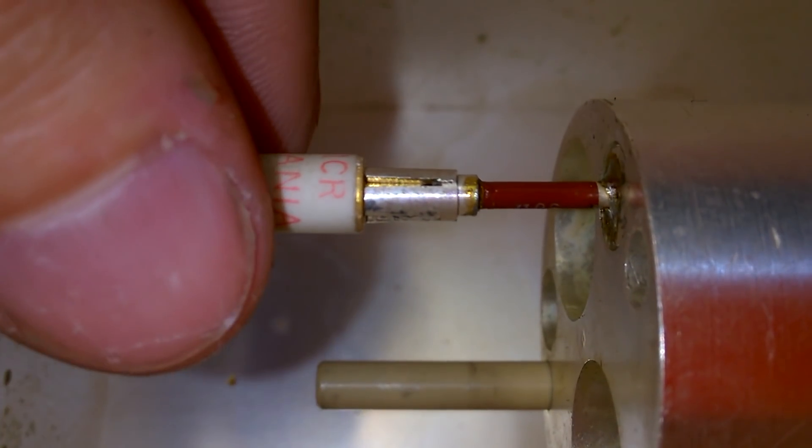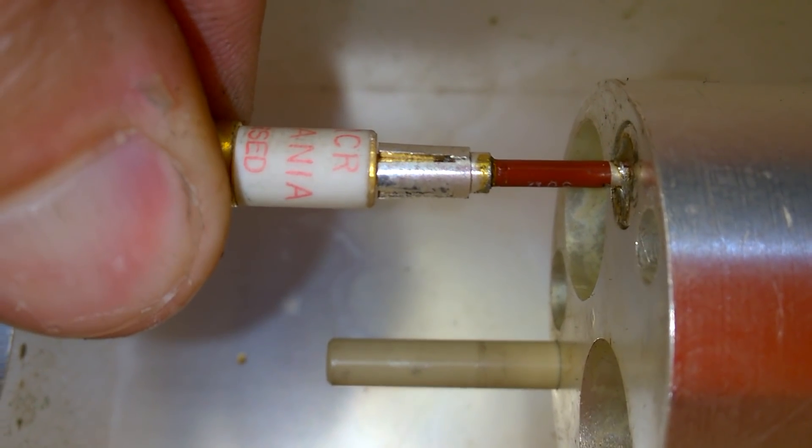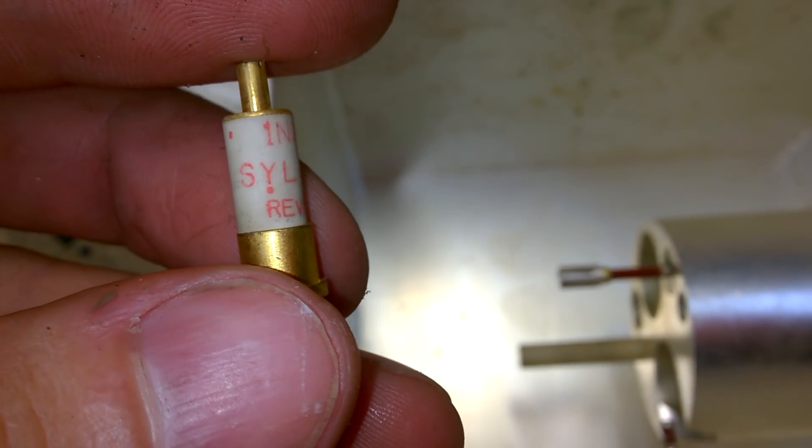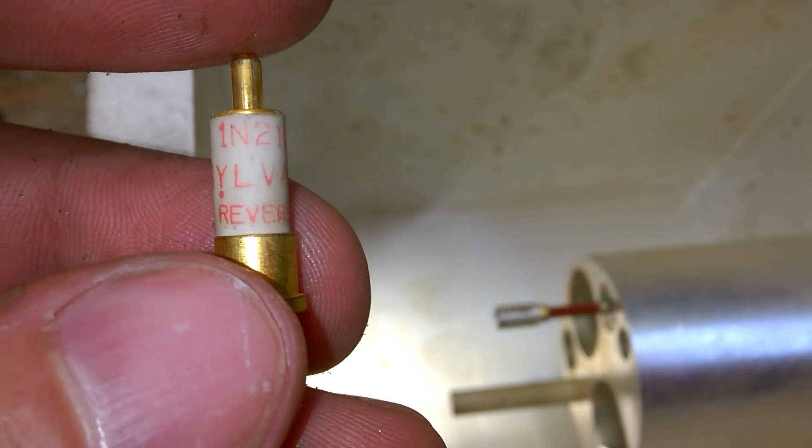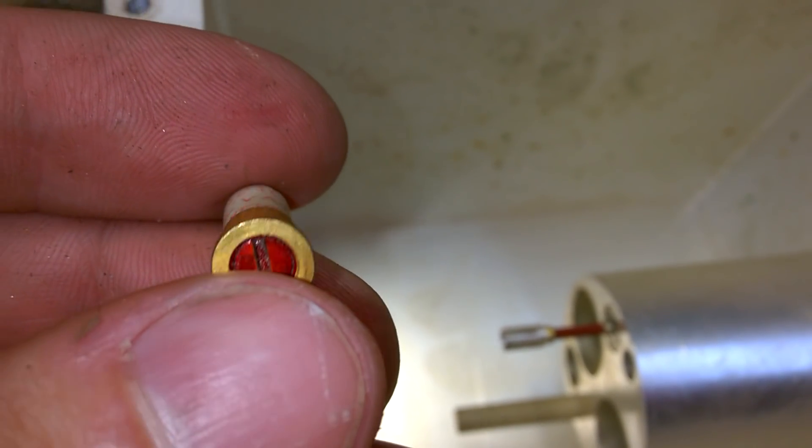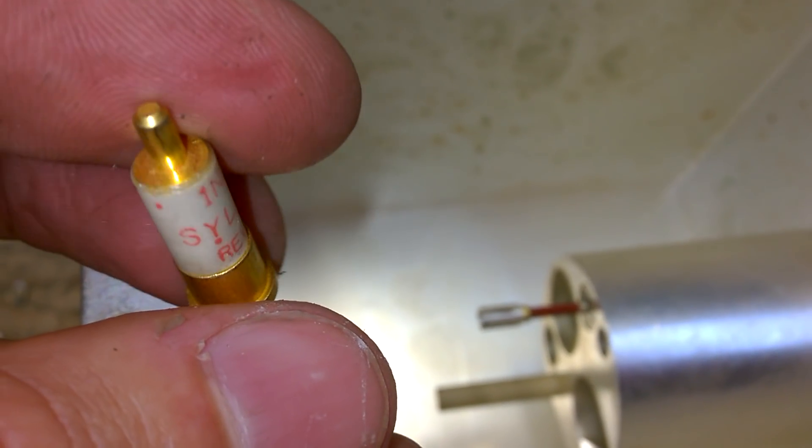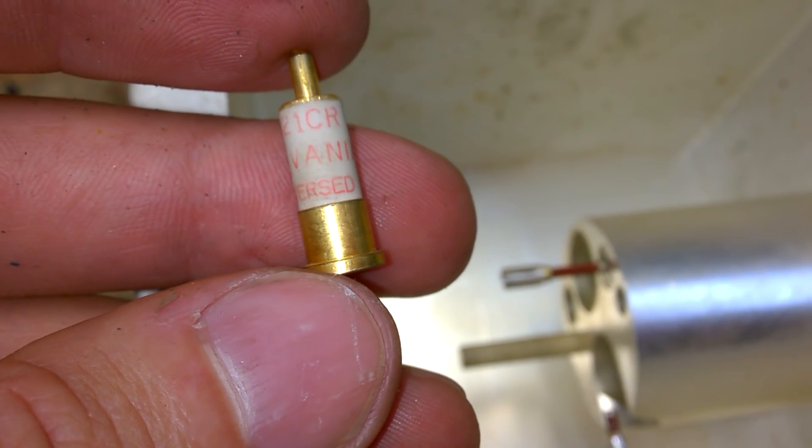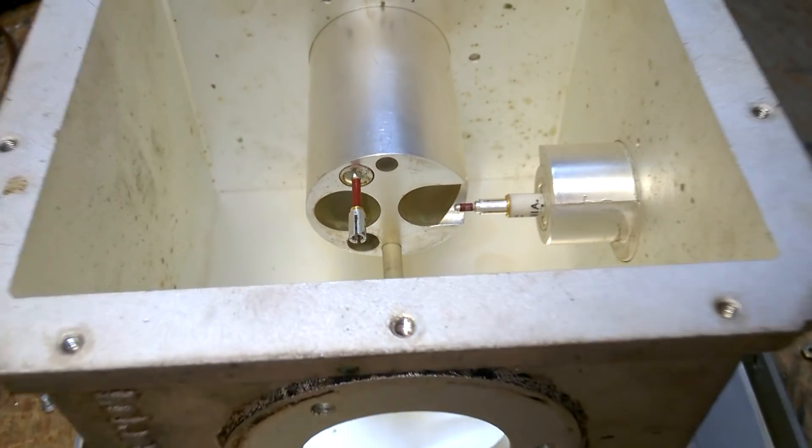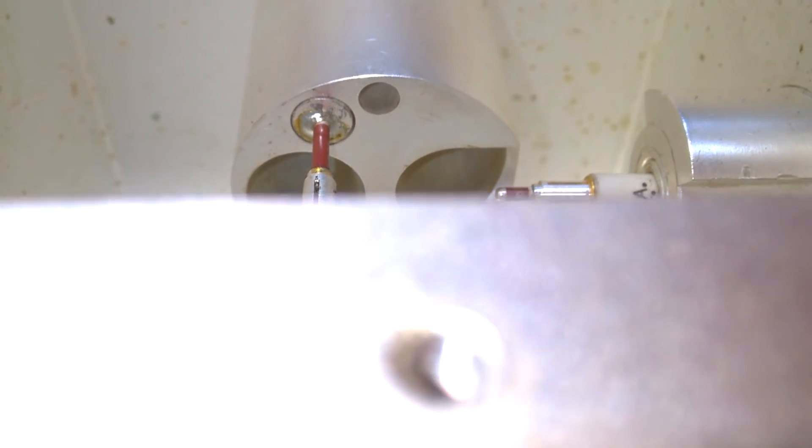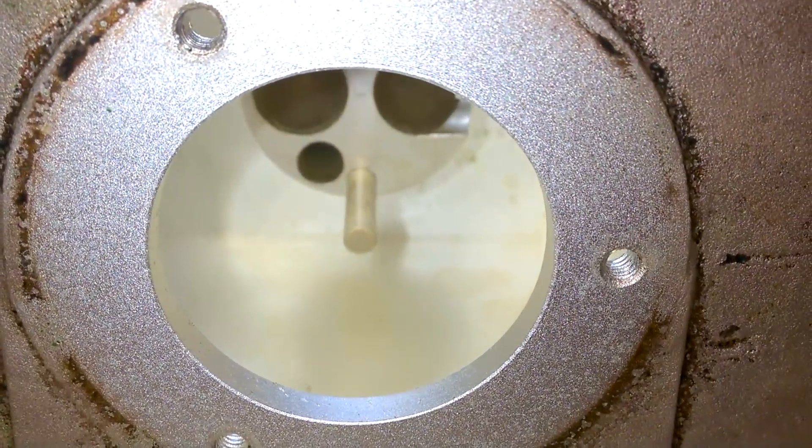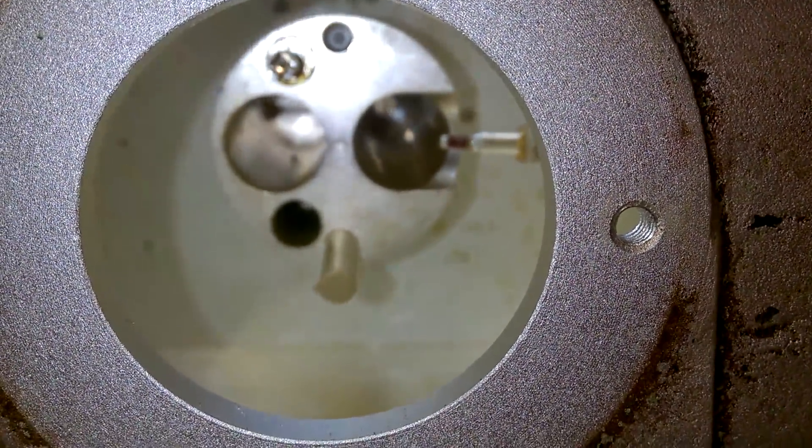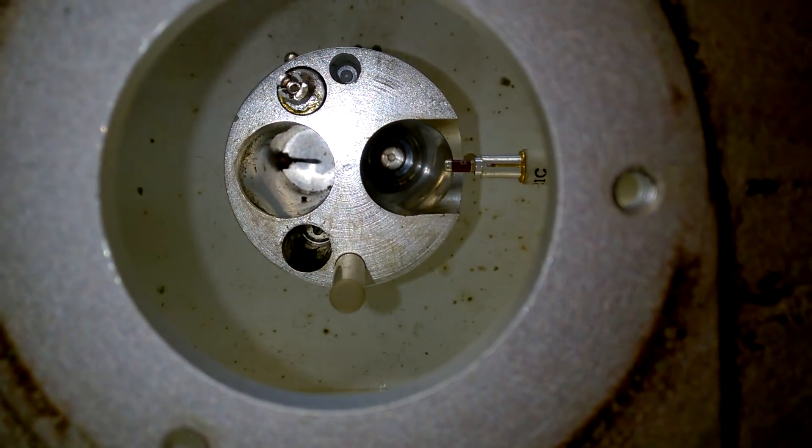This is a special type of diode! 1N21CR Sylvania! Reversed! So the anode and cathode is reversed, I guess. What else should be reversed? Reversed! Wow! Amazing!